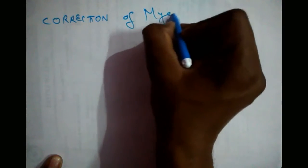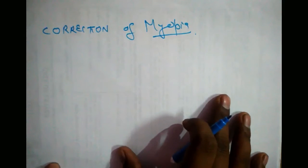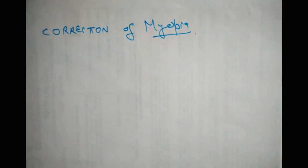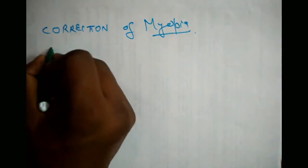Let's understand the correction of myopia. As we have seen, the converging lens of the eye is unable to properly converge the rays from objects onto the retina — it converges them before the retina. If we first diverge the rays coming from the objects, and then they are converged by the lens of the human eye, it may be possible that they will be properly focused on the retina. That's why we make use of a concave lens.